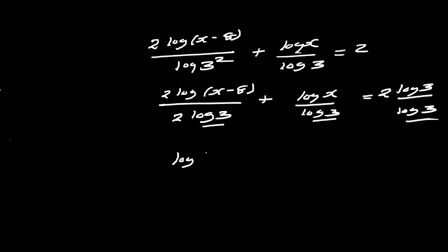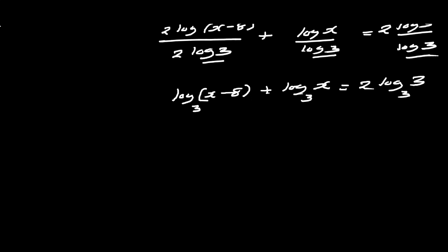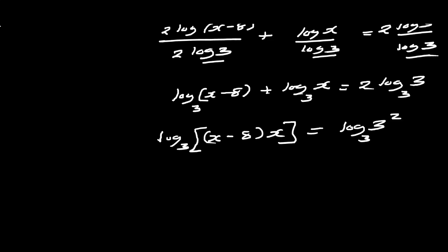So we have log(x minus 8) to base 3 plus log x to base 3 equals 2 log 3 to base 3. Since log 3 to base 3 is 1, the right side simplifies. On the left-hand side, factorizing the logarithm outside the bracket changes the addition sign to multiplication: log base 3 of (x minus 8) times x. On the right side, the coefficient 2 becomes the power of 3, giving log base 3 of 3 squared. We can then ignore the log on both sides.